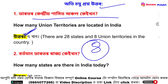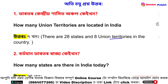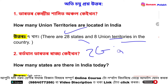This total is 8. There are 28 states and 8 union territories in the country. India has a total of 28 states. State means rights. And 8 union territories. That's 8.